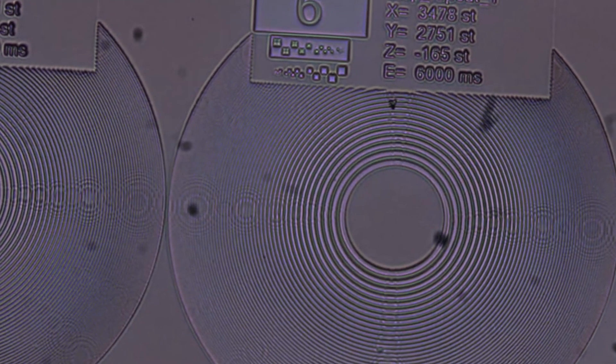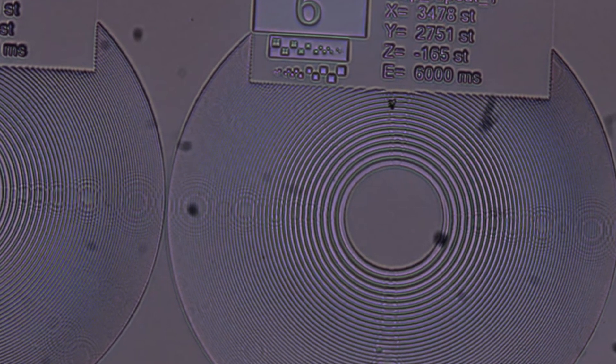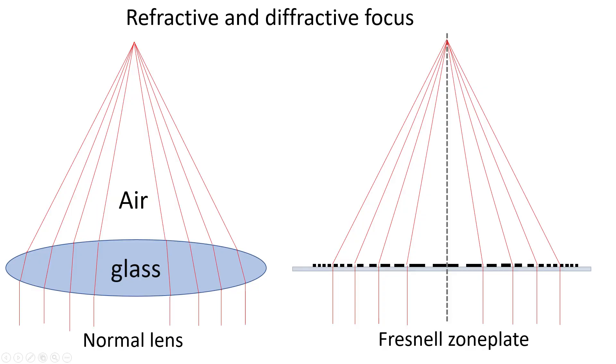As you can see, they don't look like a normal lens and they don't operate like a normal lens. So in a normal lens, you use the principle of refraction. So the light changes direction on the curved surfaces of two media that have a different refractive index like air and glass.